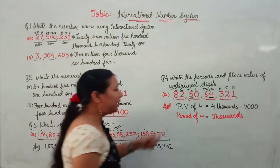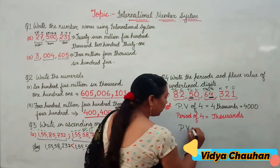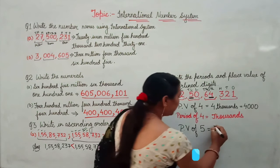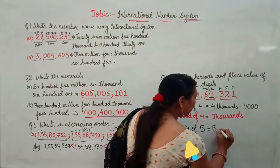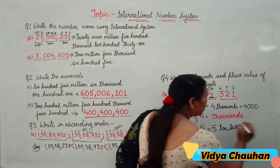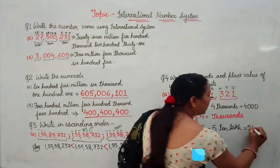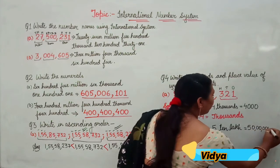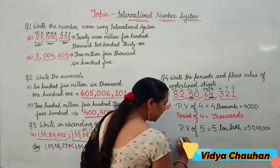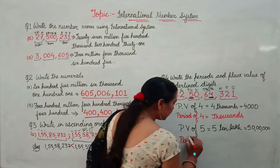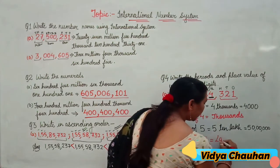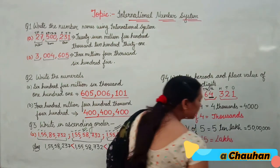Similarly, for digit 5: it is at the ten-lakhs place, so the place value is 50,00,000 — that is fifty lakhs. The period for digit 5 is the lakhs period.